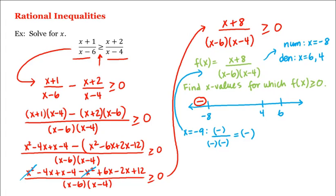And what about in the second interval? We can choose x equal to 0, for example. Plugging that into the factored form of f, we have 0 plus 8, which is a positive number, divided by 0 minus 6, which is a negative number, times 0 minus 4, which is also a negative number. And positive divided by negative times negative will be a positive number, which means in this second interval, f is positive.